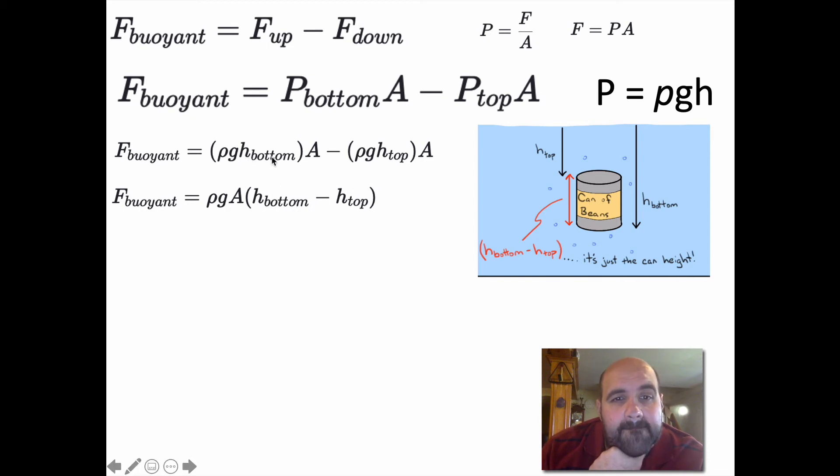Continuing, we could factor out h bottom minus h top because you have ρgh bottom and ρgh top. You can factor out the A and so on. So you end up with ρgA times (h bottom minus h top). All we did was factor out the common variables in both terms. Now, h bottom minus h top, this distance minus this distance, is really just the height of the can. It's only the height of the can. So h bottom minus h top is just h, the height of the can. So we have buoyant force equals density times gravity times area times the height of the can. We're getting close here.